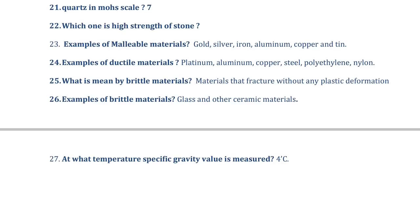Examples of ductile materials include platinum, aluminium, copper, steel, polyethylene, and nylon. Platinum is the most ductile material. What are brittle materials? Brittle materials are those that fracture without any plastic deformation. Examples of brittle materials are glass and other ceramic materials.